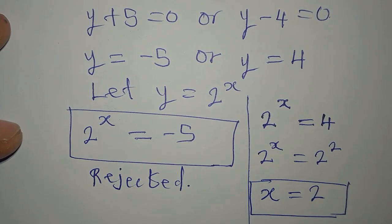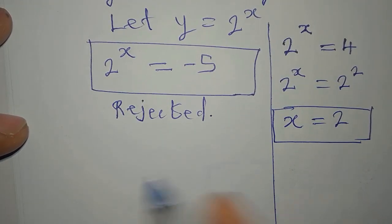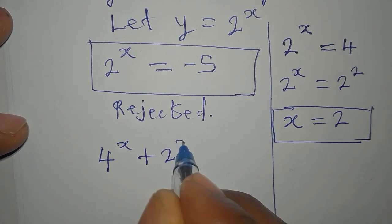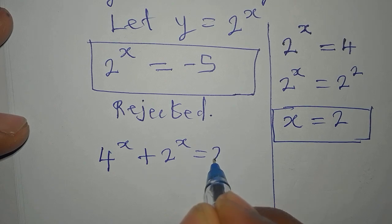And let's confirm this. We got 4 to the power of x plus 2 to the power of x equals 20.